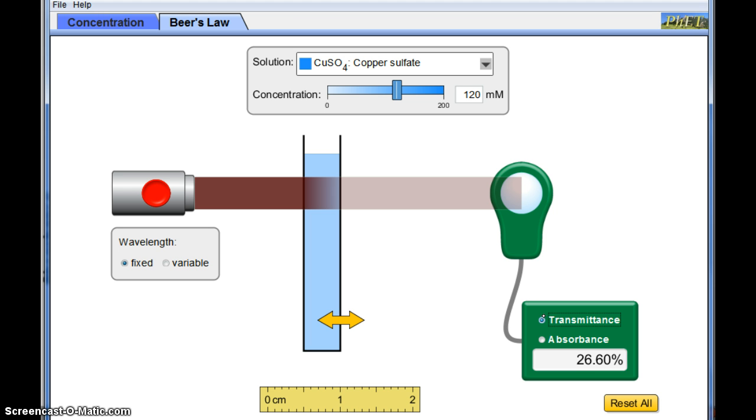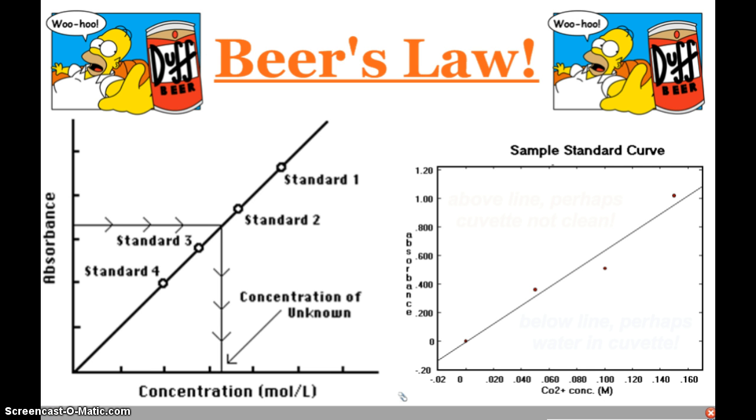Transmittance you can use. This is showing 26.6% transmittance. But absorbance is what we want to measure because of Beer's Law that shows when I graph absorbance versus concentration, I get a straight line. So there's a nice direct relationship between concentration and absorbance. So that's what I want to measure.